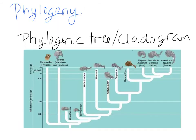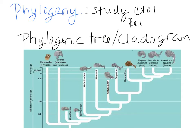Let's take a look at these evolutionary diagrams. Phylogeny is our study of evolutionary relationships — looking at relationships either within an organism or among a group of organisms and comparing them. What we have here is an example of a phylogenic tree or a cladogram. These two words are often used interchangeably.